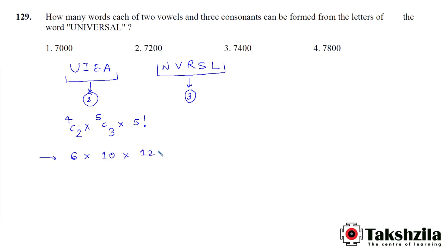Multiplying these: 6 × 10 × 120 = 7200. So the number of 5-letter words we can form is 7200, which is option number 2.